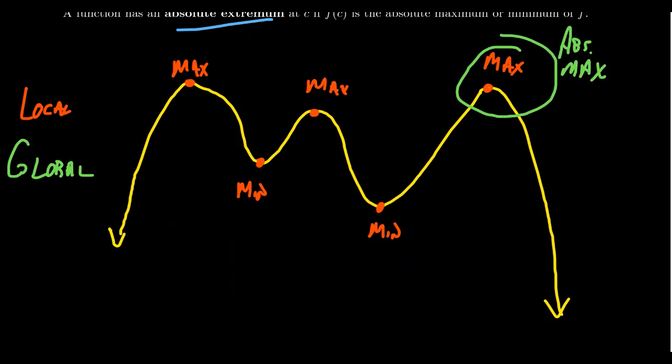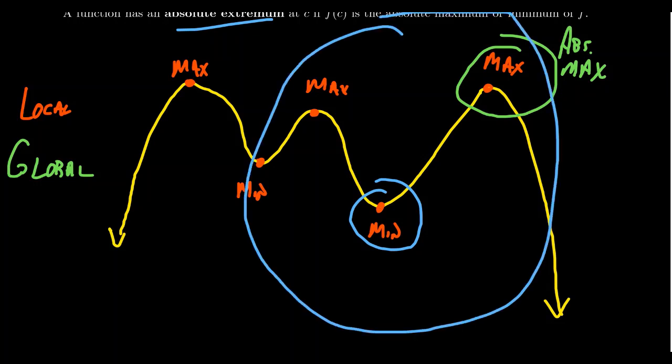On the other hand, this point right here is not the absolute minimum either because I can draw a neighborhood that'll have smaller values. If I draw a really big neighborhood, you'll notice there's a point over here with a y-coordinate that's smaller than that one. So that's not the absolute minimum either. This graph is actually an example of a graph with no absolute minimum value.